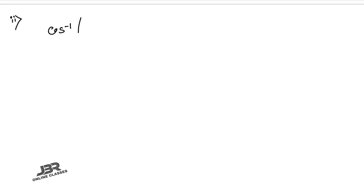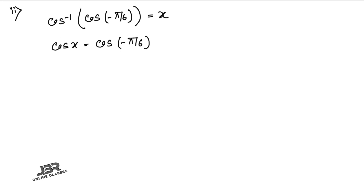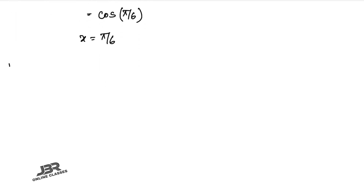Number 7.2: cos⁻¹(cos(−π/6)) = x, so cos x = cos(−π/6). Using cos(−θ) = cos(θ), we get cos(π/6). Therefore x = π/6.